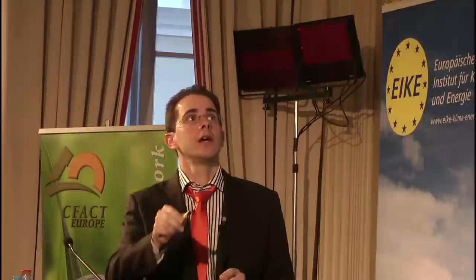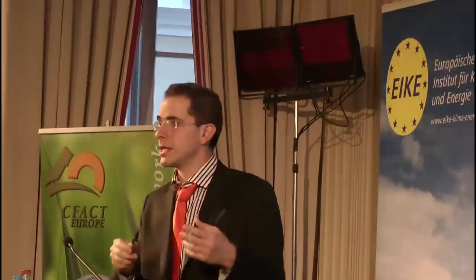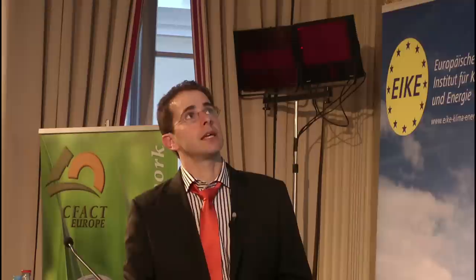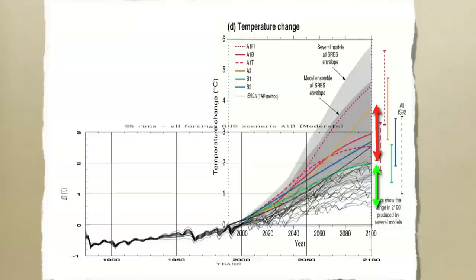So the solar forcing gives us a larger total forcing, and in order to explain the temperature increase we need a low sensitivity, which is consistent with observations — it's a consistent picture. This low climate sensitivity tells us that the temperature increase over the 21st century is going to be low as well. We can plug the models forward in time using parameters that produce 20th century temperature increase consistent with observations. The range of temperature increases we get is much lower than the IPCC predictions.